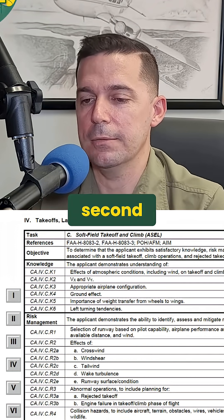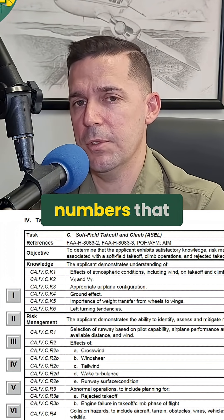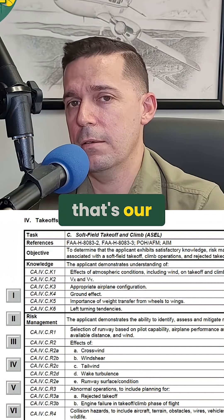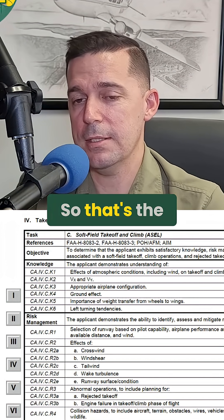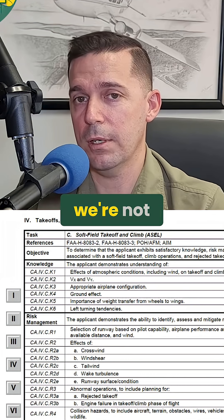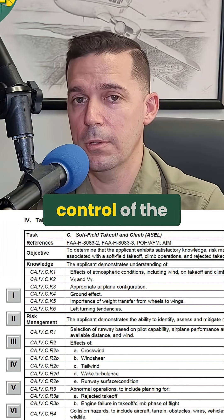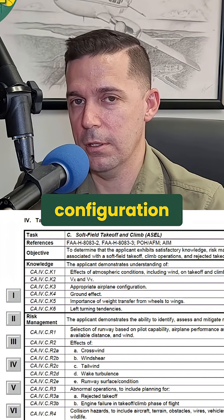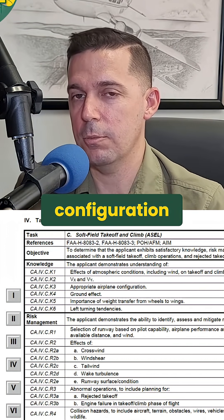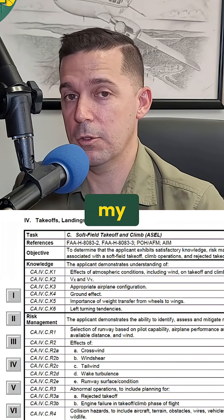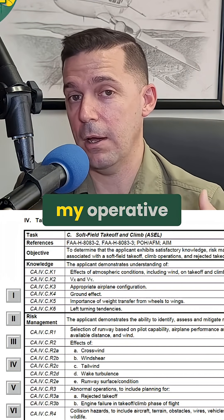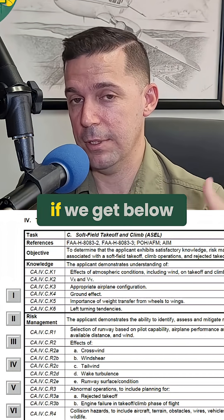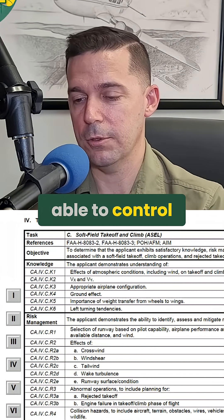Let's talk about soft field for a second. One of our performance numbers we're going to discuss is VMC, and that's our minimum control speed. That's the speed that if we go lower than that, we're not going to be able to maintain directional control of the airplane during a specific configuration — broadly, with my critical engine failed and windmilling, and my operative engine at full power. In that configuration, if we get below VMC, we're not going to be able to control the airplane.